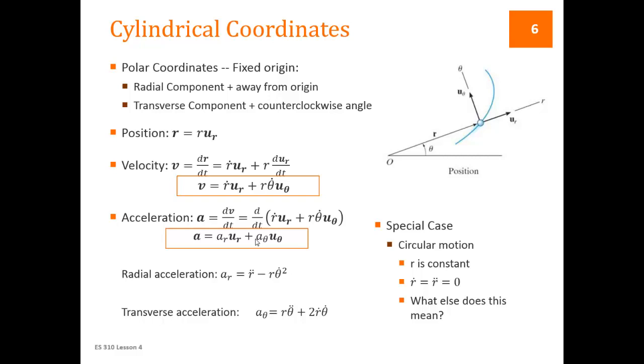The second set of coordinate systems we want to learn about are cylindrical coordinates. In this case, instead of moving with the particle, the coordinates rotate with the particle but don't actually move with the particle. You've got a radial component that always points from the origin through the particle, away from the origin, and a transverse component which corresponds to a counterclockwise angle, perpendicular again. Our coordinate systems are always perpendicular, but as the angle would increase counterclockwise, that would be the direction of the unit vector in the transverse.